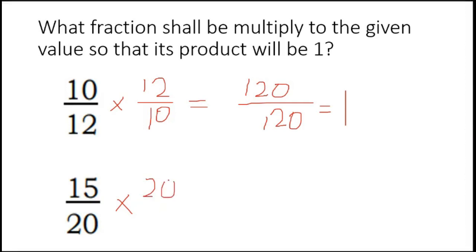And 15 over 20. This is 300, and another 20 times 15 is 300. 300 divided by 300 is 1.